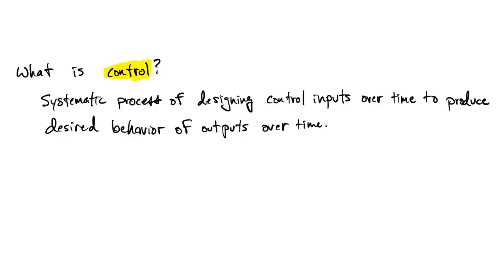What we want to do with control is to use our ability to manipulate the control inputs in order to achieve some kind of desired behavior in the outputs. While we could consider affecting the state, the state is often something we don't know. So this course is really about an input-output perspective on dynamic systems and designing those controls. Before we talk about what kinds of desired behavior we want, we'll look at an activity that helps us understand the different kinds of mechanisms we could use to achieve control.